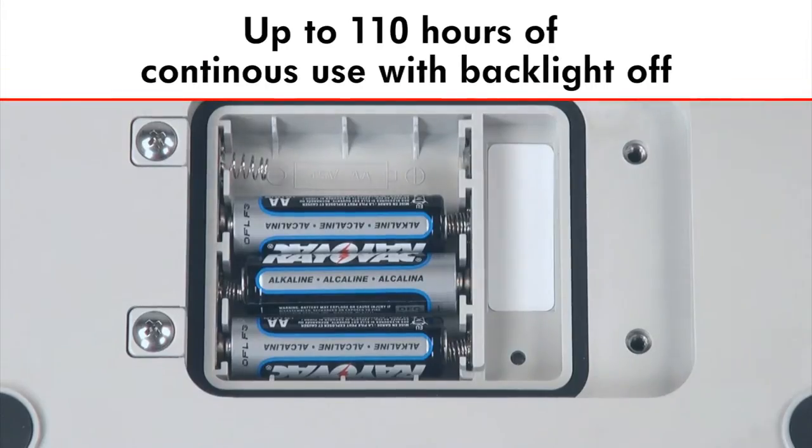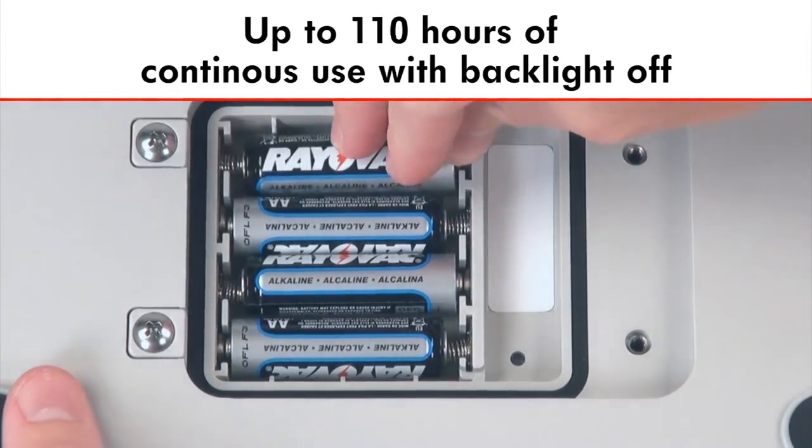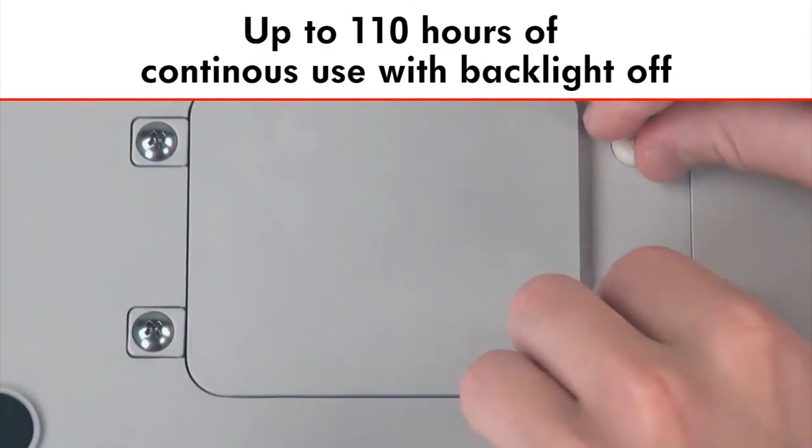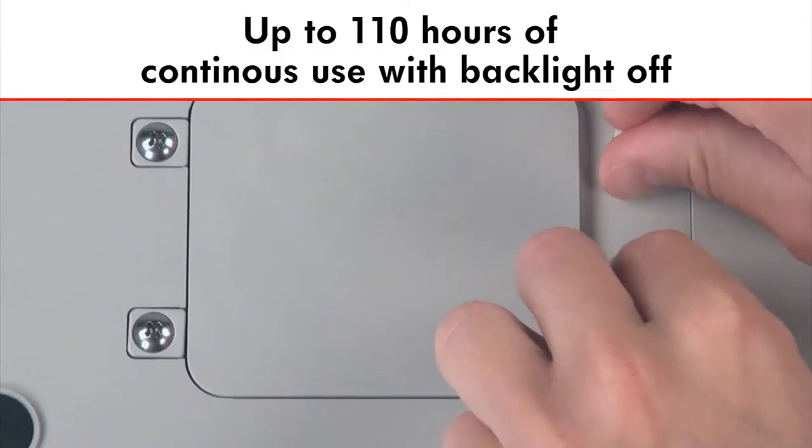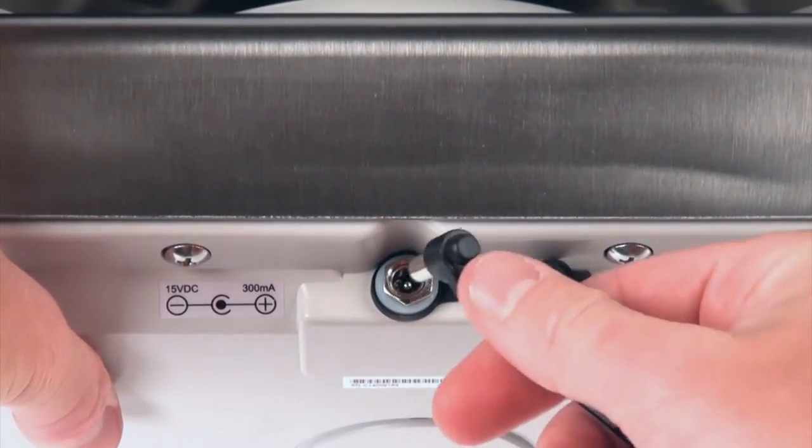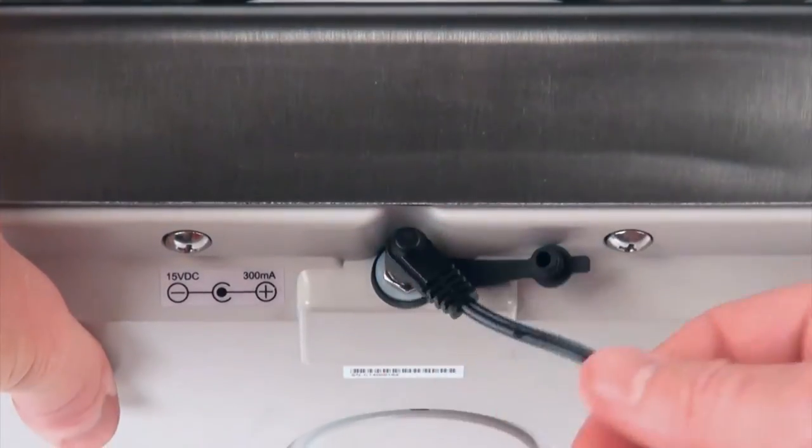With the optional batteries, the PS30 has up to 110 hours of continuous use with the backlight off for all mobile weighing tasks such as farmers markets and roadside stands. An AC adapter is also provided with the scale for more fixed portioning applications.